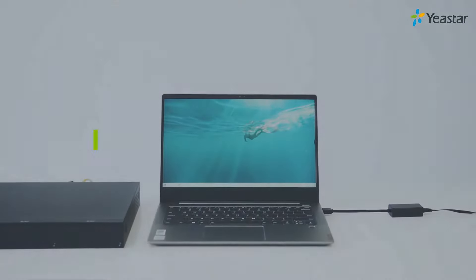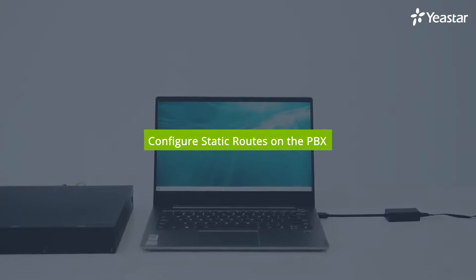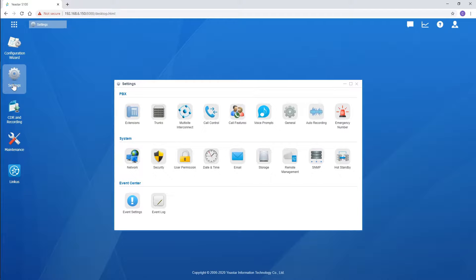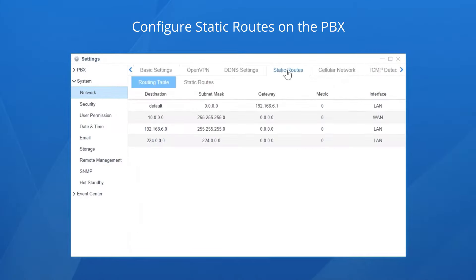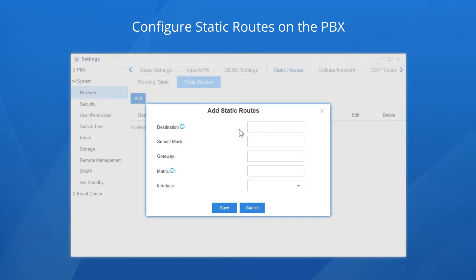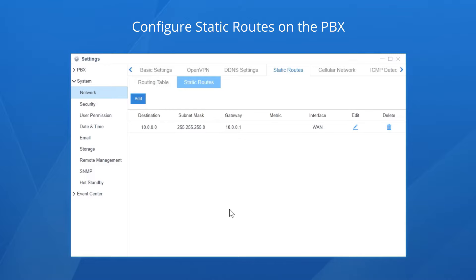We'll also need some extra work to configure static routes so both the LAN port and the WAN port will work in order. Log in again and go to the network settings section. Find Static Routes — all the routes for the LAN port will work because it is the default port. What we need is to create a rule for the WAN port. Choose Static Routes and click Add. Fill in the information according to the details provided by the service provider, then choose the WAN port. Save and apply the configurations. The new route has been added to the routing table, and now both ports will work normally.